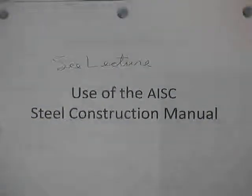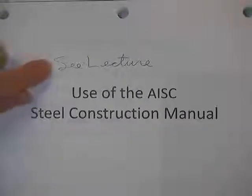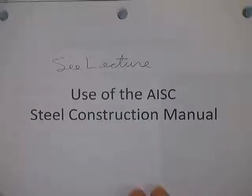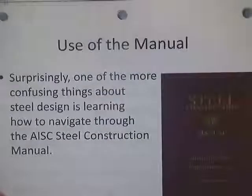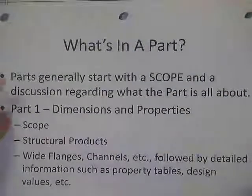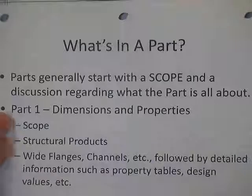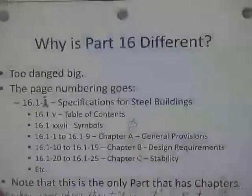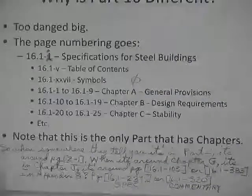Here's the stuff you'll find out there on the flipped class. It's basically the use of the AISC Steel construction manual. What's in there, 17 parts. What's in a part, usually got a scope, and then, for instance, part one, dimensions and property, and then sub-things that scope, structural products, wide flanges, channels, and so on.